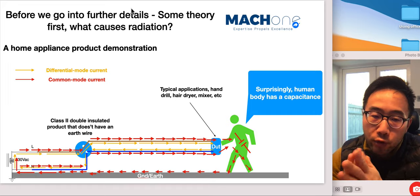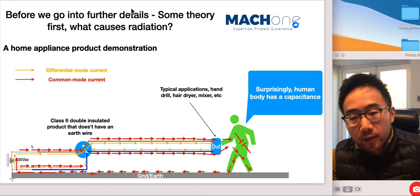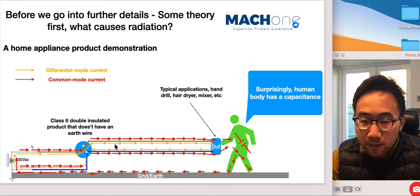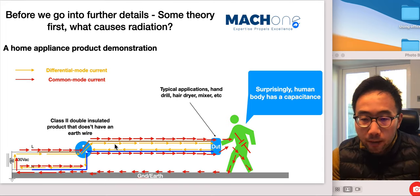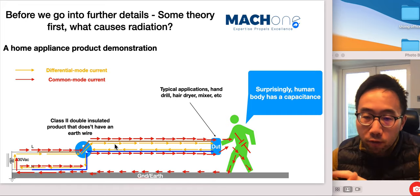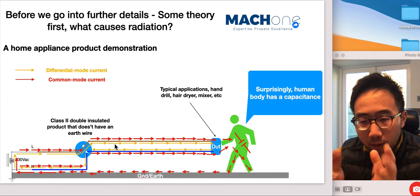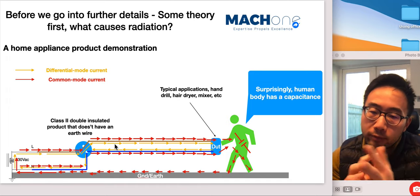When it comes to differential mode noise, it's rather easy to understand. As we show here, you have a yellow arrow basically indicates that's the differential mode current and the common mode current is sometimes quite difficult to understand. People can get a grasp of what it means, but often it's not the case.